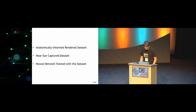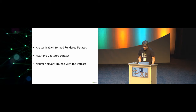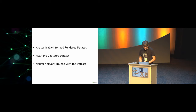So these are what we did. The first two are about datasets. The first is a rendered synthetic dataset that's anatomically accurate — we borrowed one existing model and modified it to suit our near-eye use case. The second was capturing a real dataset specifically for near-eye configuration. The third is training a neural network to perform gaze-related tasks.